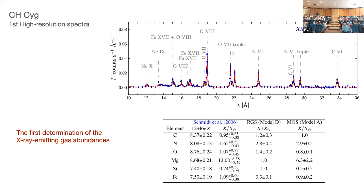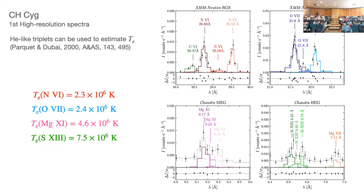The fit uses two temperatures. The high resolution spectra can also be used to estimate the multi-temperature structure of the source. Using helium-like triplets, we can use the intensities of different lines to estimate electron temperatures. I present four helium-like triplets: N VI, O VII, Mg IX, and Si XIII. There's a continuum produced by the free-free emission, but it's negligible. We can use the ratio to estimate temperature.